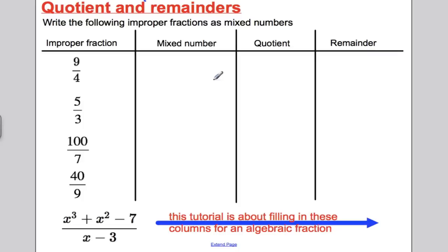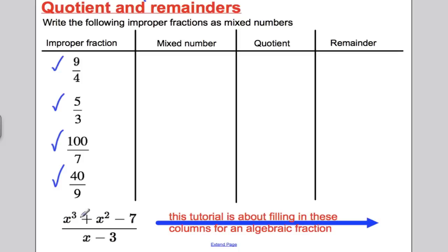What's an improper fraction with numbers? It's a fraction — a division — where the top number, the numerator, is bigger than the bottom. 9 is bigger than 4? Improper fraction. 5 is bigger than 3? Improper. 100 is bigger than 7? Improper. And 40 is bigger than 9? Improper. Because the numerator is bigger than the bottom, we know that the denominator goes into the numerator more than one time. We can work out how many times and what's left over — that's converting to a mixed number.